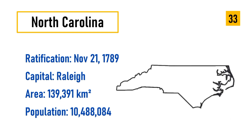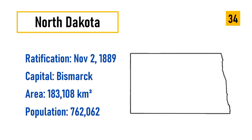Number 33: North Carolina, ratification November 21, 1789, capital Raleigh, area 139,391 square kilometers, population 10,488,084. Number 34: North Dakota, ratification November 2, 1889, capital Bismarck, area 183,108 square kilometers, population 762,062.